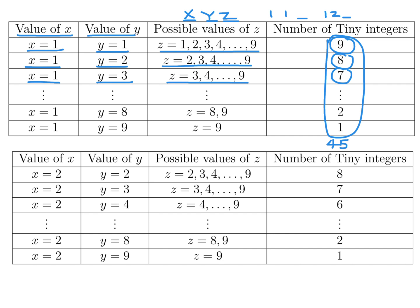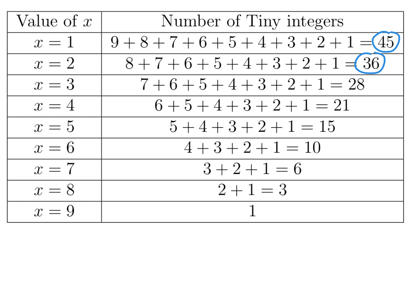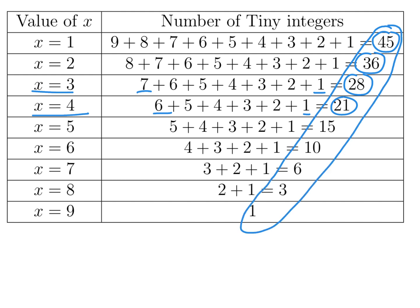Repeating the same thing for X=2: Y=2 gives 8 choices, Y=3 gives 7, and so on, totaling 36. For X=3, you add 1 to 7, giving 28. For X=4, you get 1 to 6, which is 21. Continuing this pattern and adding all groups together gives a grand total of 165 for the XYZ case.